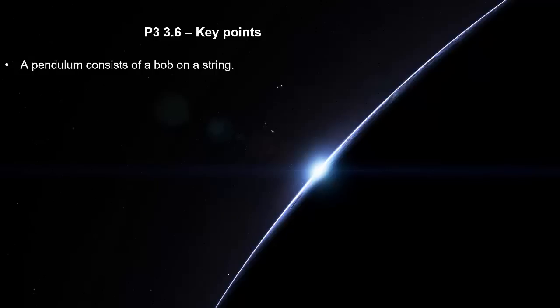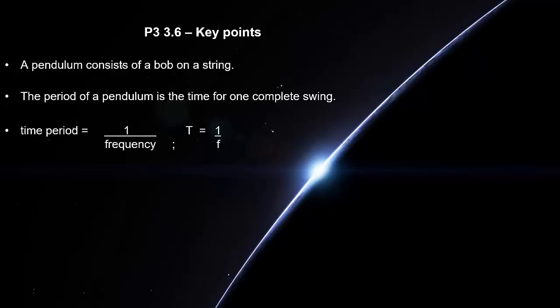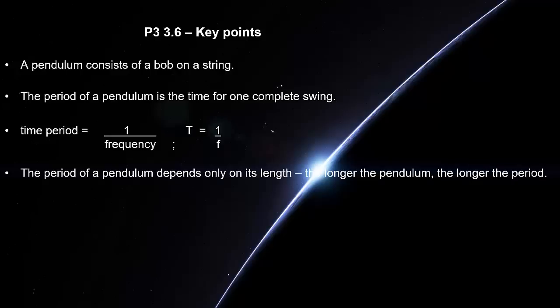A pendulum consists of a bob on a string. The period of a pendulum is the time for one complete swing. Time period equals one over frequency. The period of a pendulum depends only on its length. The longer the pendulum, the longer the period.